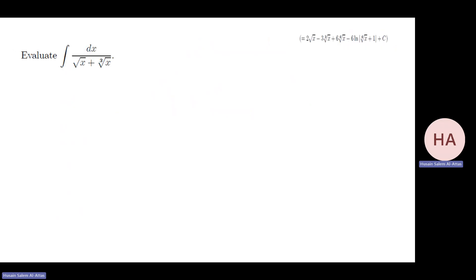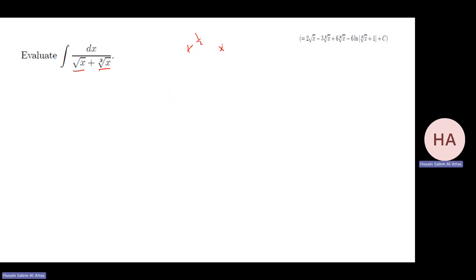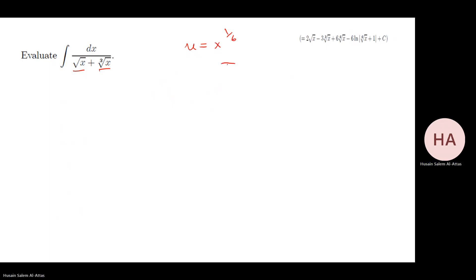Next problem involves both √x and ∛x (x^(1/2) and x^(1/3)). I need a substitution that kills both. Since the LCM of 2 and 3 is 6, I choose x = u⁶, so dx = 6u⁵ du. Then √x = u³ and ∛x = u². With this substitution, I get rid of both the square root and the cube root.